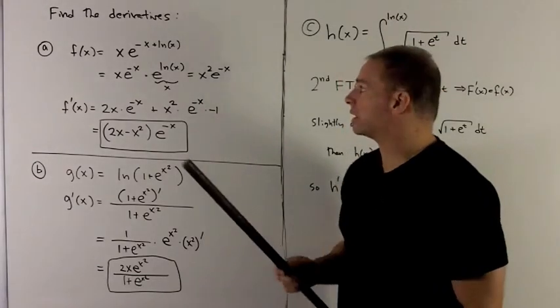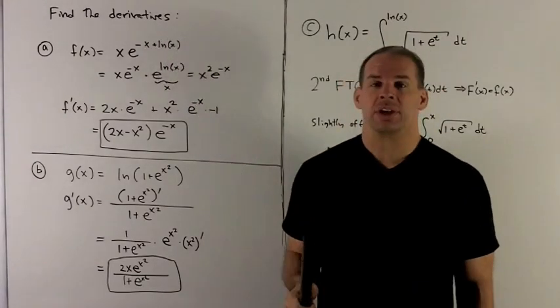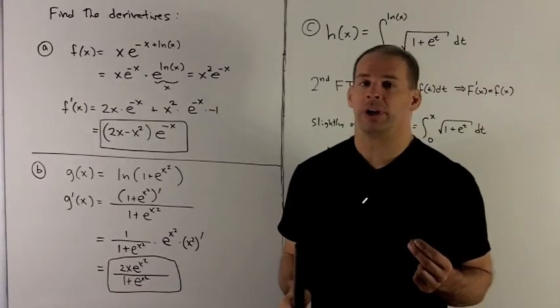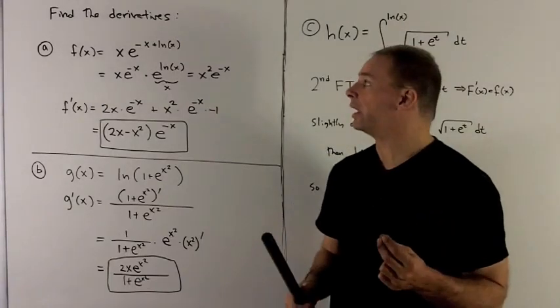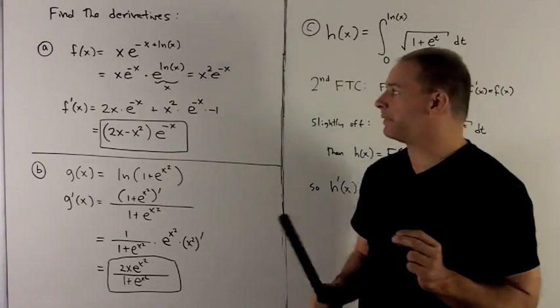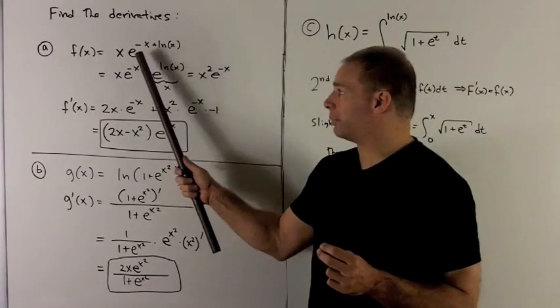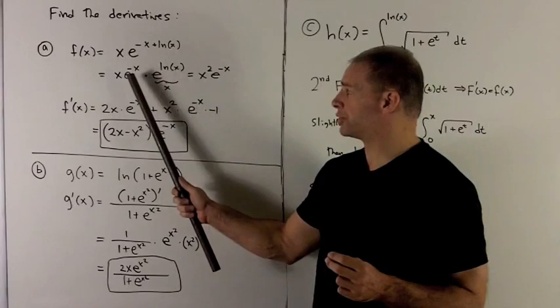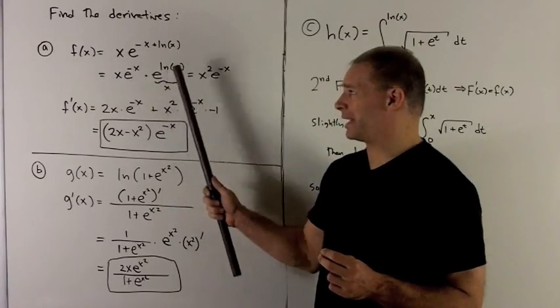Now if you look at this, we have e, we have natural log of x, we would love to collapse that if we could, but there's that minus x in the way. So to simplify, I can break this up. A sum upstairs turns into a product when I put each by itself.